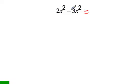So 2 subtract 3 is going to be negative 1, and the x and the exponent stay the same, so the variable and the exponent stay the same. So it's negative 1x squared, which is negative x squared.